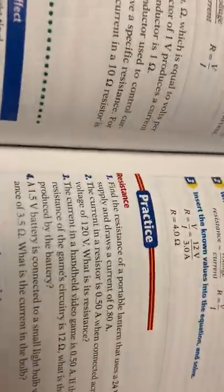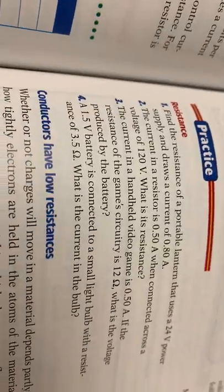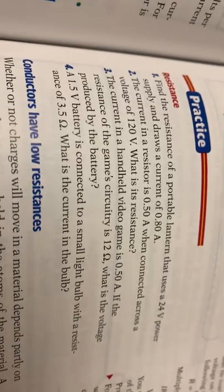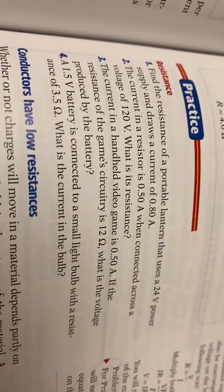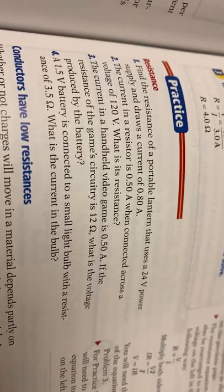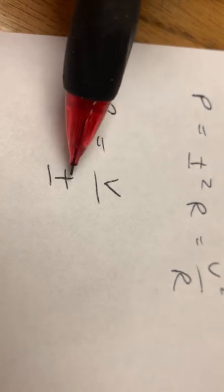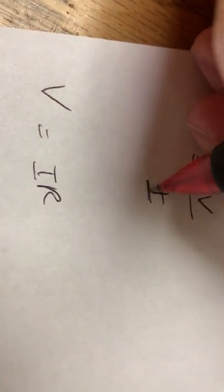Let's do number four. A 1.5 volt battery is connected to the small light bulb with a resistance of 3.5 ohms. What is the current of the bulb? The current is going to be the I. I equals V over R. I give you all the variations: R equals V over I, that is an I there folks not a T, V equals I times R and I equals V over R.